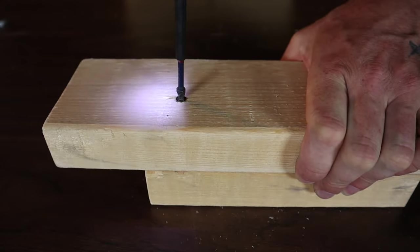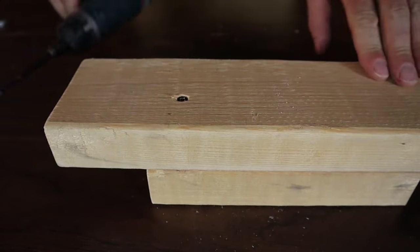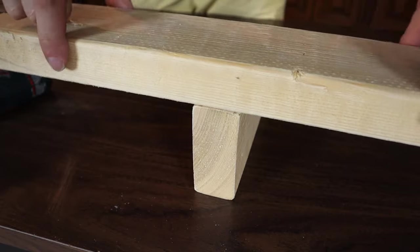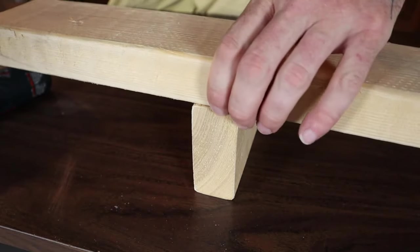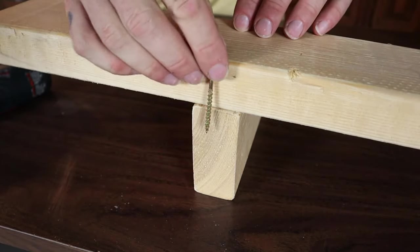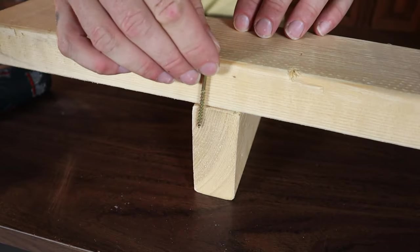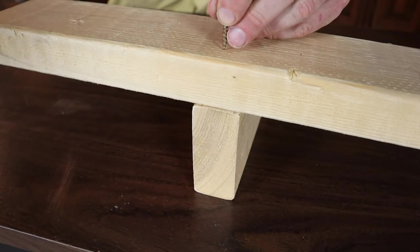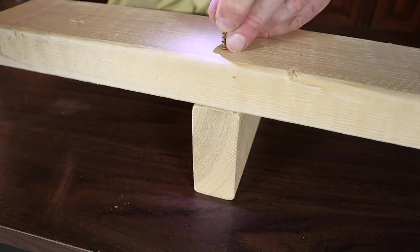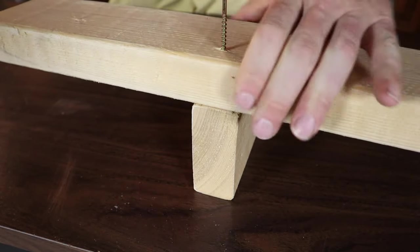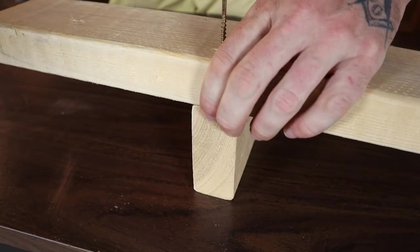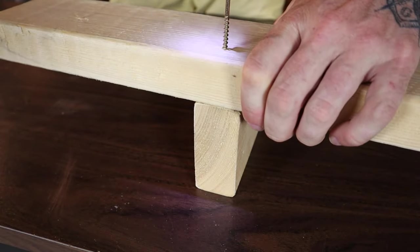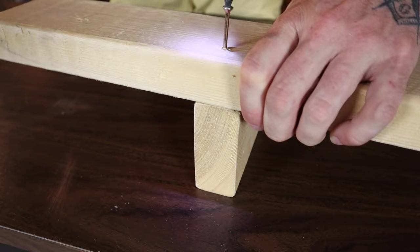If you happen to be screwing something together like this, just pay attention when you screw in that you're not to one side or the other, because that's going to cause this to split out. You're definitely going to want to make sure that your screw is right centered in the middle, so that way when you screw it in it doesn't split this out either way. You would just line it up nice and good like that and screw it in.